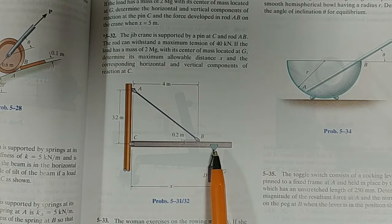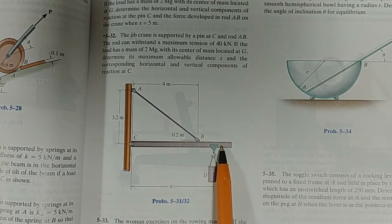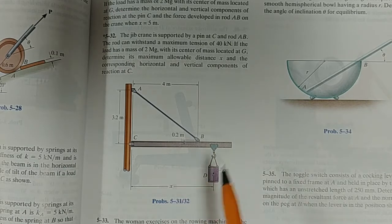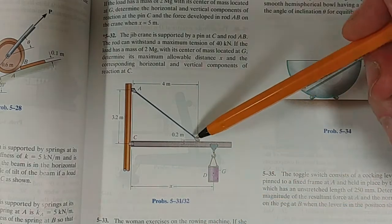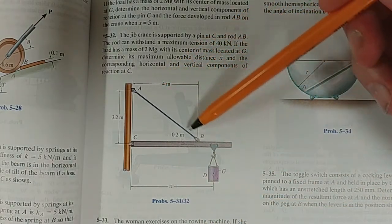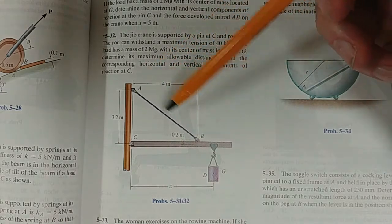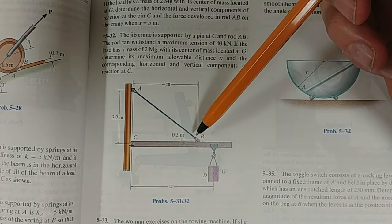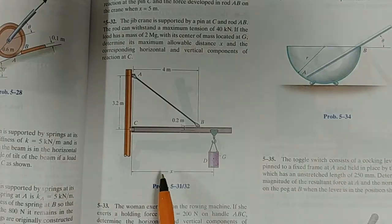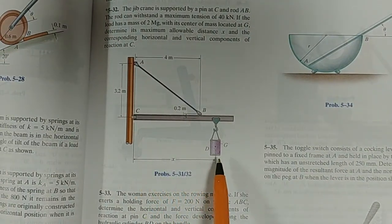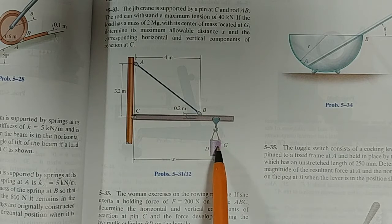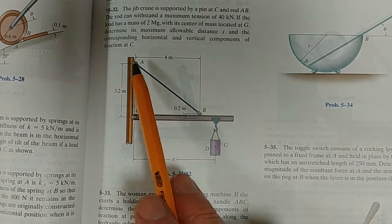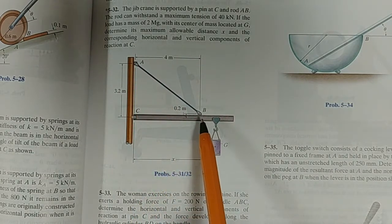And what we know is, as we move this weight further and further away, the moment increases, right? Which means just intuitively that it's going to keep increasing the tension in here. But the maximum tension that this rod can withstand is 40 kilonewton. So we need to find what is the maximum distance that this weight can be so that it doesn't essentially break this supporting rod.